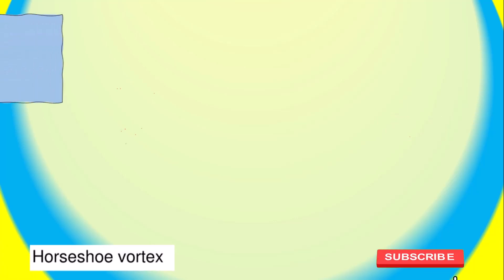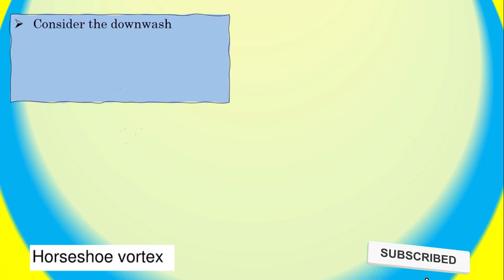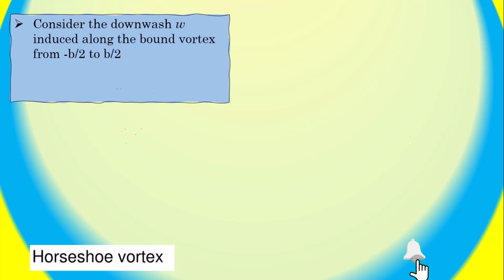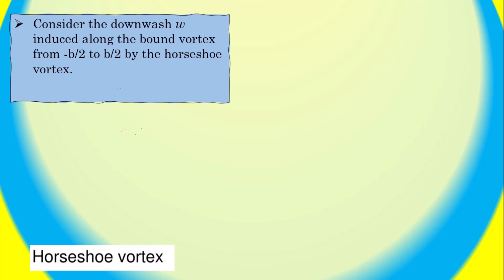A single horseshoe vortex is shown in the video. Consider the downwash W induced along the bound vortex, from Y equals negative B/2 to Y equals B/2, by the horseshoe vortex. The equation for downwash velocity induced along the bound vortex is given by: downwash velocity W(Y) equals negative gamma divided by 4 pi times Y.